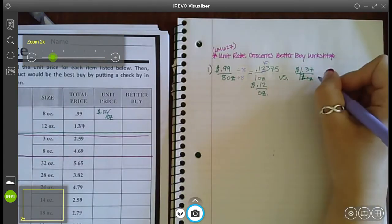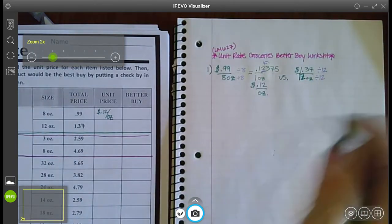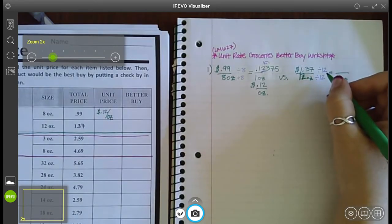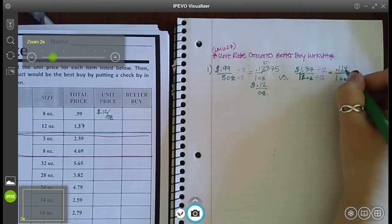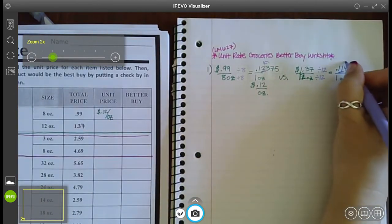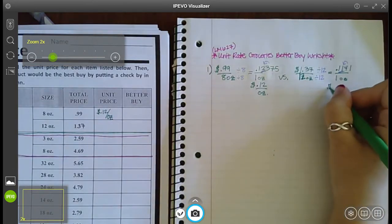All right, now let's divide by my denominator to get the unit rate of one and do the same thing on top. So 12 divided by 12 is one, so I have one ounce on the bottom. And when I type this in, 1.37 divided by 12, I get 0.1141 on my calculator. So I look to the hundredths place and that four tells this one to stay a one. So this is 11 cents per ounce.